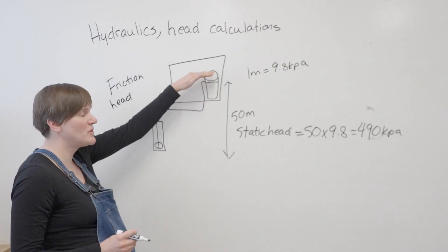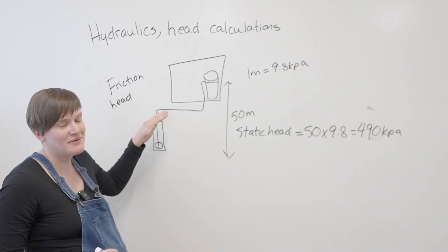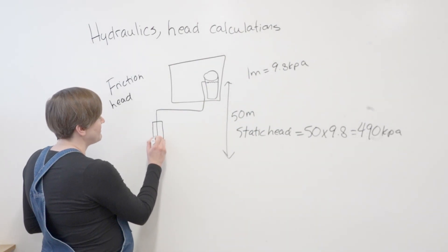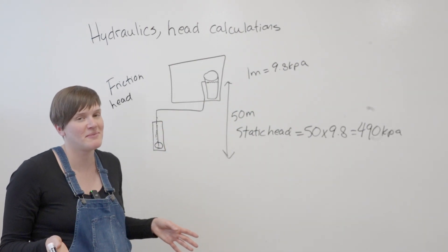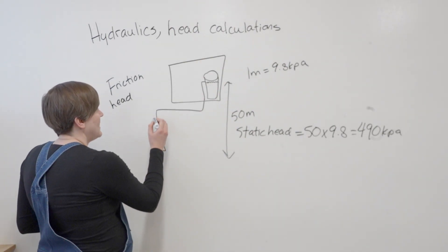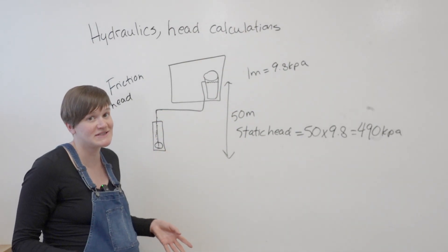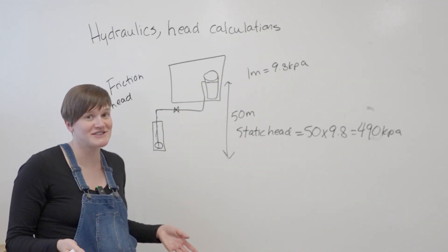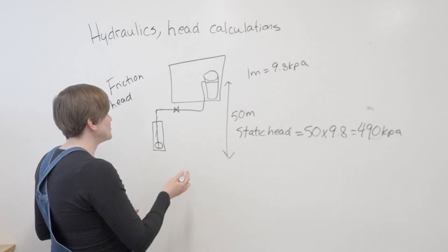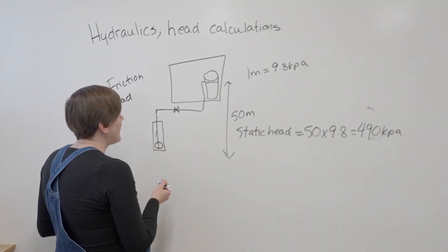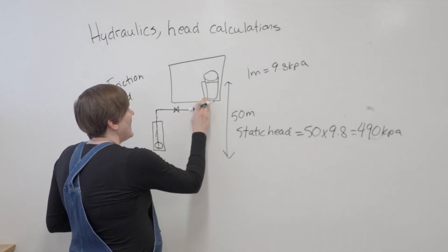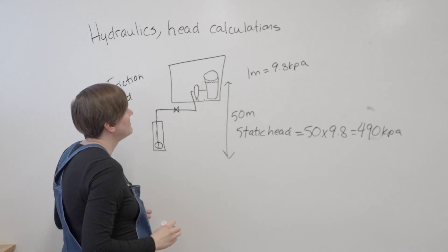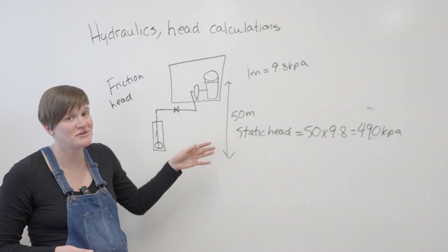So static head is always there even when water is not moving. Friction head is once water starts moving, you're going to lose pressure due to friction. So water is moving up this pipe, it's rubbing on the walls of the pipe and there's friction there and so it's losing pressure. And when it goes around this bend, there will be a pressure loss there as well. Maybe there's a valve here. Valves have a pressure loss as well. Some of them have quite large pressure drops depending on the type of valve. And if this was going through a filter before going into the tank, filters also have a large pressure drop as well.